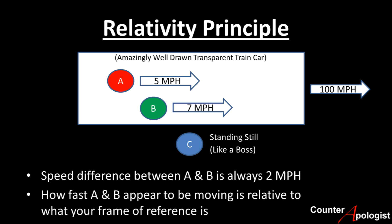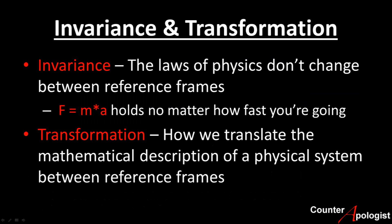This is relativity — how fast each person appears to be moving is relative to how fast the observer is moving. Each observer has its own frame of reference. However, we know by experiment that the laws of physics, including the laws of motion, don't change if you are going at different speeds. Force still equals mass times acceleration no matter how fast you are going. This is known as invariance.